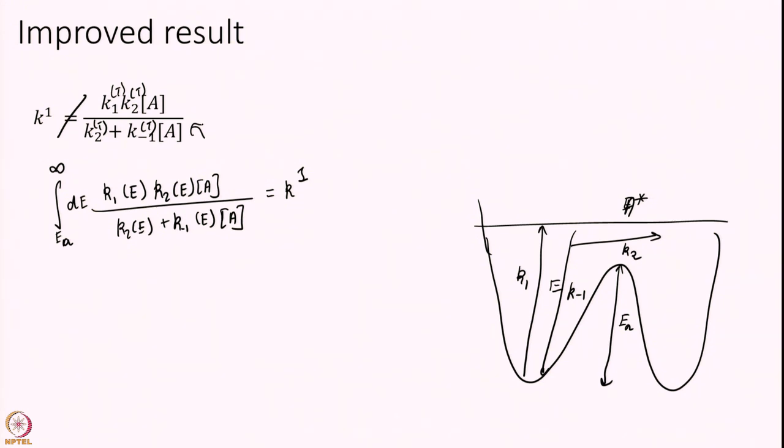They said you know, you have been calculating these numbers as a function of temperature, but that is not correct. You should be calculating them as a function of energy and integrating over all possible energies. I will massage this a little bit to get into a form that is better to understand. I will divide both numerator and denominator by K minus 1 A. I will get K1 over K minus 1 into K2 divided by 1 plus K2 over K minus 1. And all these things are function of energy. I am not writing them explicitly, but it should be understood now.